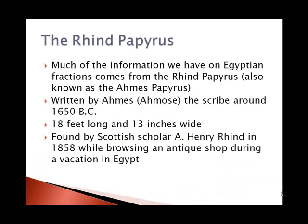Most of the information we know about Egyptian fractions comes from the Rhind papyrus, which is also known as the Ahmes Papyrus. It was written by an Egyptian scribe named Ahmes around 1650 BC, and it was a very long rolled-up scroll, 18 feet long and 13 inches wide. It was found by a Scottish scholar with the last name of Rhind in 1858 AD, while he was looking around an antique shop on vacation in Egypt.